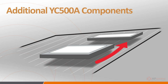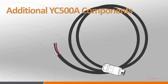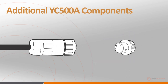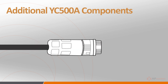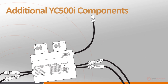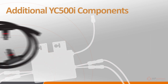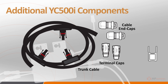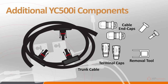The AC branch cable ends have a female connector at one end for attaching to the first YC500 in a circuit, and bare wires — red L1, black L2, and white neutral — at the other end for connecting into a junction box. The end caps are weatherproof termination caps that lock onto the last YC500 female AC connector in the circuit as protection against the elements. For the YC500I, additional components include an AC bus or trunk cable, cable end caps to seal off an open end of the trunk cable, terminal caps to seal off an unused drop on a branch, a removal tool to remove the terminal sealing cap, and MC4 caps for unused DC cables on the microinverter.